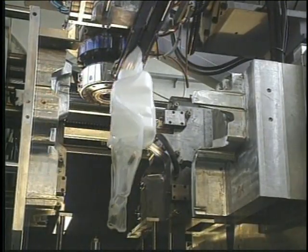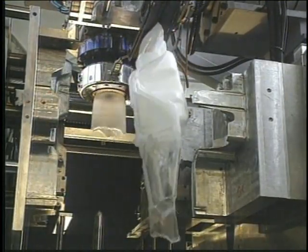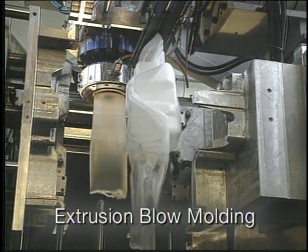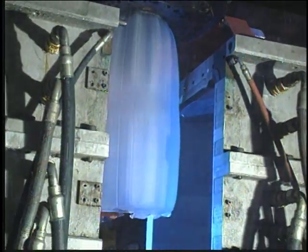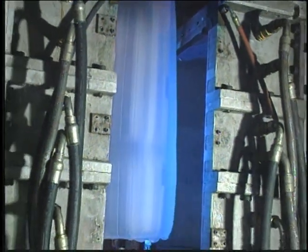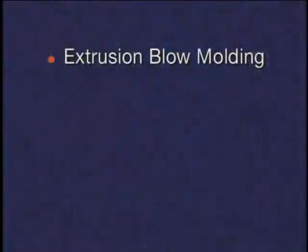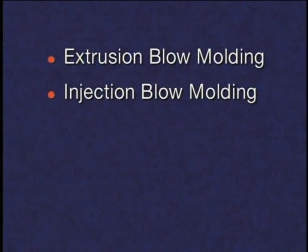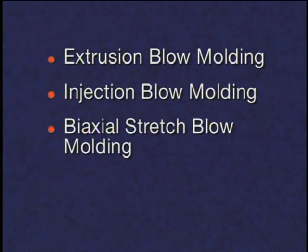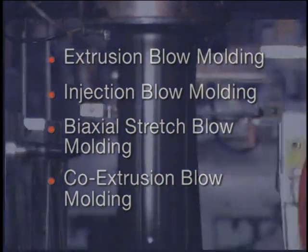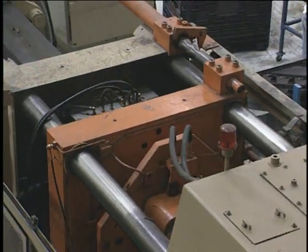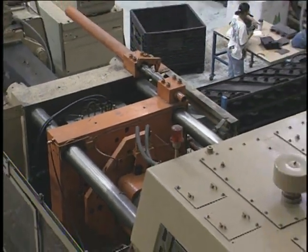Most thermoplastic blow molded products are produced via extrusion blow molding using high density polyethylene, or HDPE. But there are many additional blow molding processes which include injection blow molding, biaxial stretch blow molding, and coextrusion blow molding. These blow molding processes all use elements of either extrusion or injection molding, or a combination of the two.